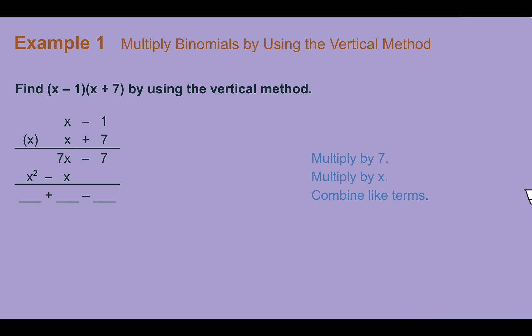Example one, multiply binomials by using the vertical method. So as I just showed, for the vertical method, we're going to take each piece and multiply like we did in elementary school. So 7 times negative 1 is negative 7. 7 times x, 7x. x times negative 1, negative 1x. And x times x is x squared. Line up our like terms, fill in our placeholders, and then just combine down. So 0 plus x squared is x squared. 7 plus negative 1 is positive 6x. Negative 7 plus 0 is negative 7. And that is our final answer.